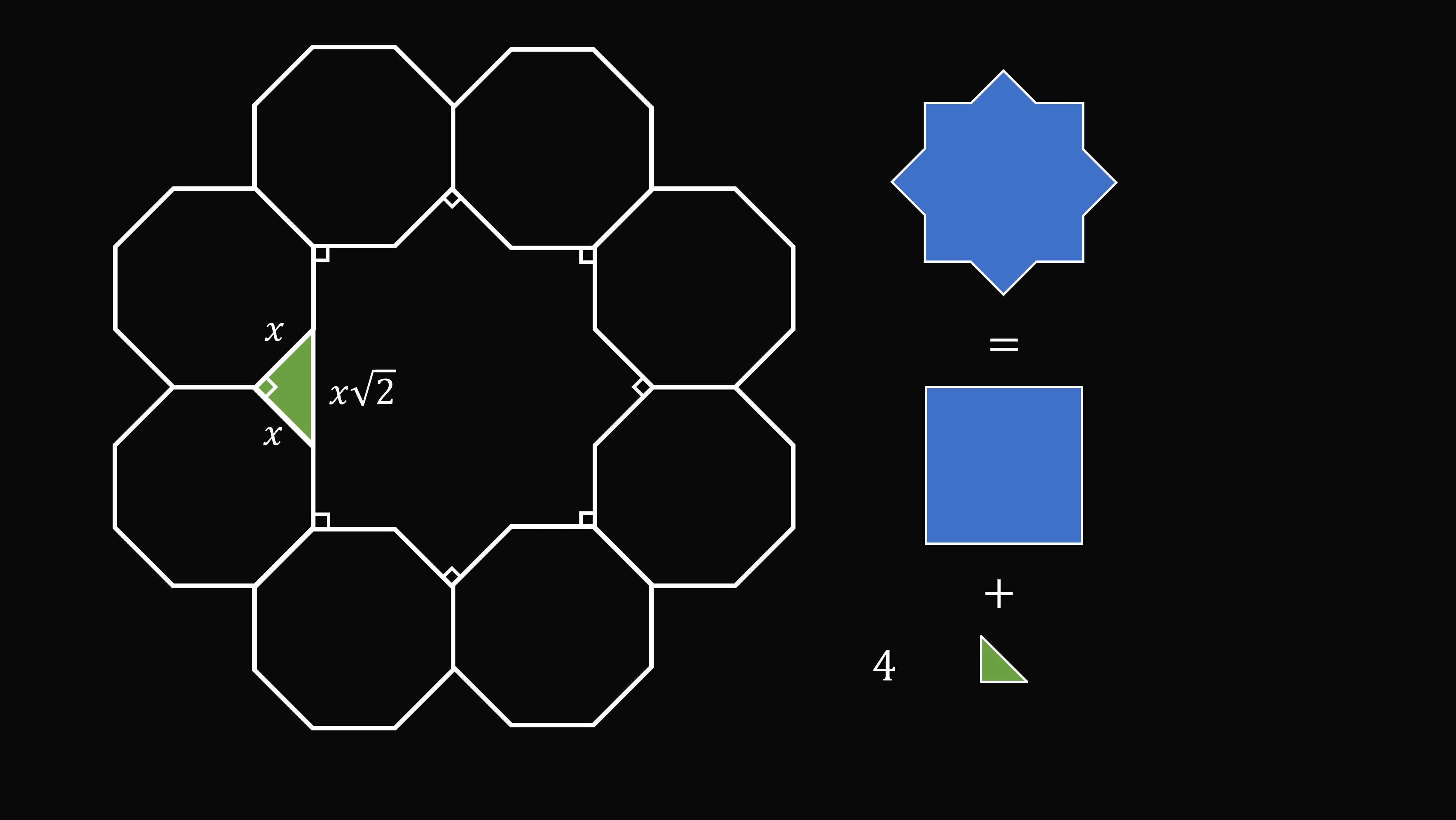Now, to calculate the side length of the square, we have two more sides of the octagon. So this is equal to x, and this is equal to x. So the total side length of the square is equal to 2x plus x root 2.